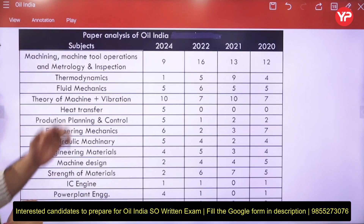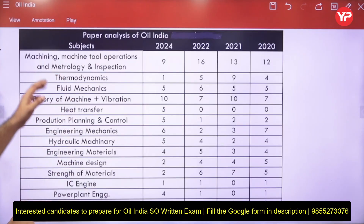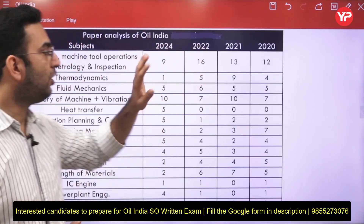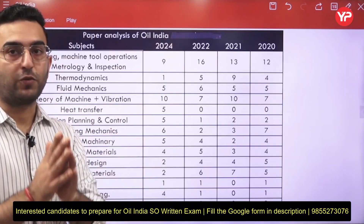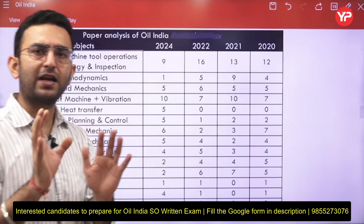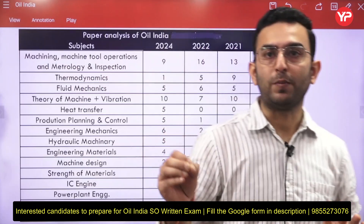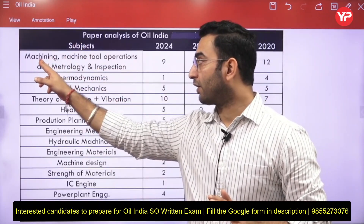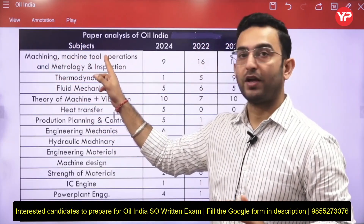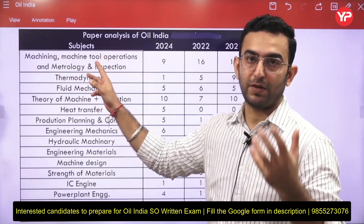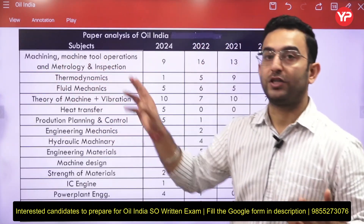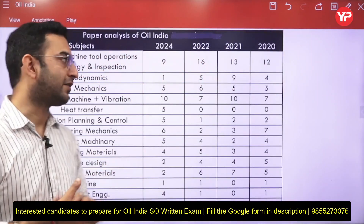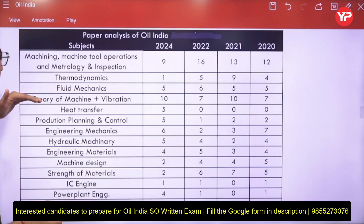Regarding subject weightage, production carries the highest weight. In recent years, you can expect around 12 to 15 questions from production out of the 60 technical questions — that is 15 to 20 percent of the paper from production alone. The production syllabus covers the machining part and machine tools, including lathe machines, milling machines, broaching machines, and also metrological principles such as limits, fits, and tolerances.